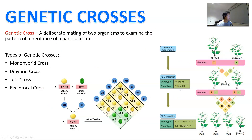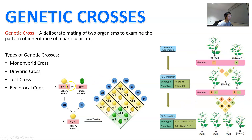Genetic crosses are when we deliberately mate two organisms to examine the pattern of inheritance of a particular trait. There are four types of crosses we're going to look at: monohybrid cross, dihybrid cross, test cross, and reciprocal cross. The test cross and reciprocal cross are smaller aspects of the monohybrid and dihybrid crosses that we're going to look at.